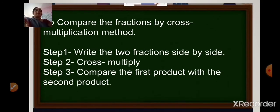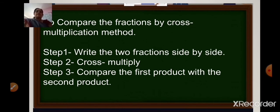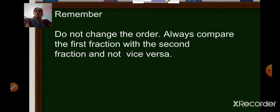To compare the fractions by cross multiplication, you have to follow some steps. The first step is to write two fractions side by side. The second step is to cross multiply the numerator of the first fraction with the denominator of the second fraction. The third step is to compare the first product with the second product. One important thing to keep in mind: you do not have to change the order of the fraction. Always compare the first fraction with the second fraction and not vice versa.